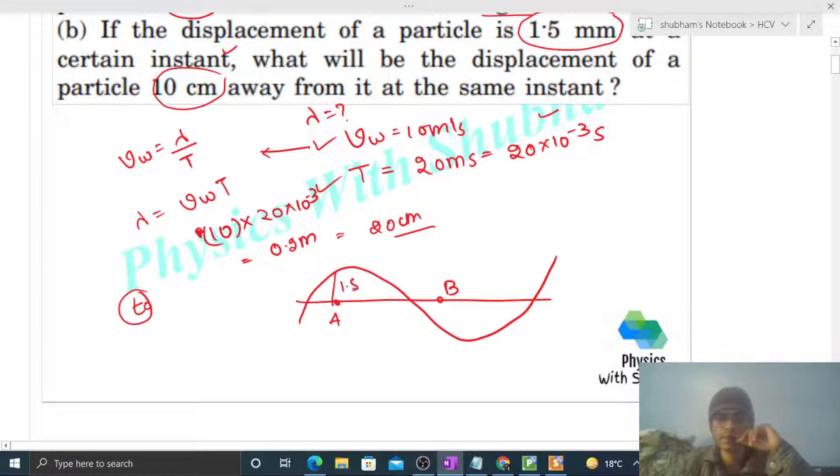Particle A's displacement at a given time, let's say T naught time, is given 1.5 mm. So what will be the displacement of particle B at same time T naught? We have to find out particle B's displacement and the distance between the two particles that is given 10 centimeter. So how will we do this? First of all, both particles, particle A and particle B, will do SHM.